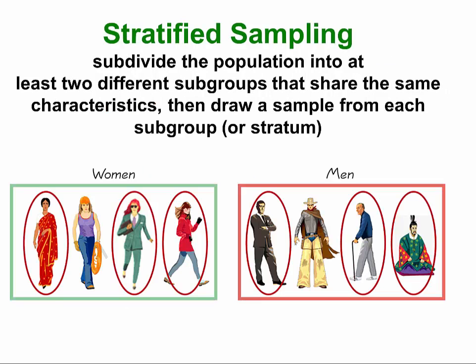Using that same idea with stratified sampling — if there were 10 dorms, a random sample from each of the 10 dorms would be taken. By the way, in stratified sampling you don't have to take the same number from the groups involved. For example, you could have just as well selected two women and three men — that would still be stratified sampling.